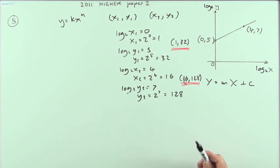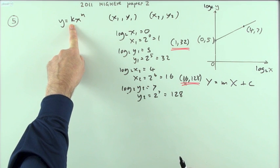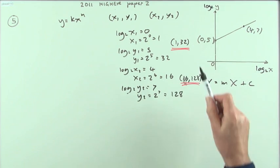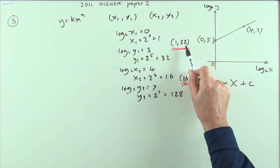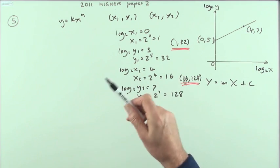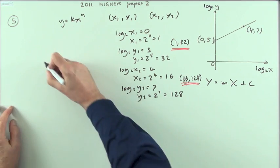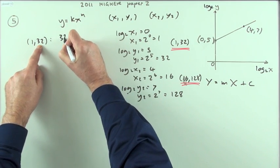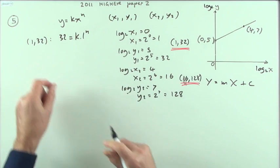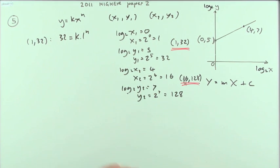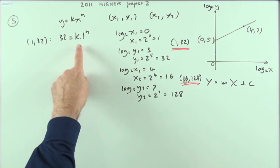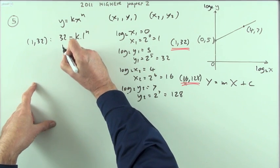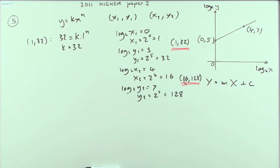But if the question had started with this as a suspected form, and when you did the logarithms, it turned out it was a straight line, and you were given the initial values, you wouldn't have to transfer them into the logs and do the equation line. You could just do it by simultaneous equations again, this way. If the point 1,32 works, that means that if y is 32 and x is 1, you've got 32 is k times 1 to the n. Now again, you don't need simultaneous equations, because that's knocked out one of the variables straight away. n just disappears, because 1 to the power anything is just 1. So straight away that would just say k is 32, using the initial values.